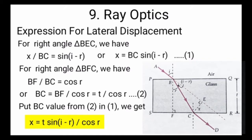For right angle triangle BFC, we have cos r equals BF upon BC, or BC equals BF upon cos r. According to the figure, the value of BF equals t, so BC equals t upon cos r. This is equation number 2.